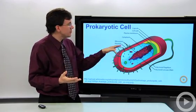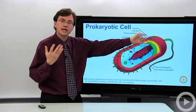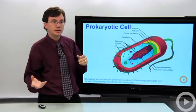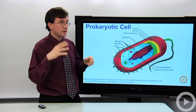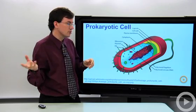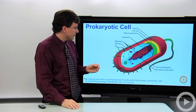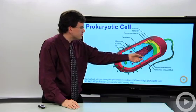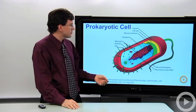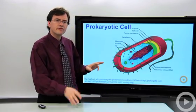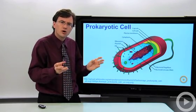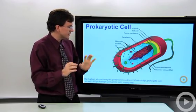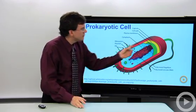The cell wall can be made out of various kinds of materials, whether it's peptidoglycan or other kinds of molecules. You'll see the ribosomes — those are the small little things floating around — and then they may have a few other small organelles like some small vacuoles or vesicles, but that's pretty much it.